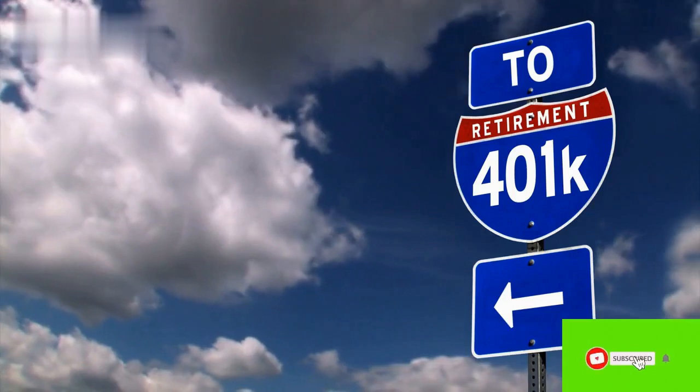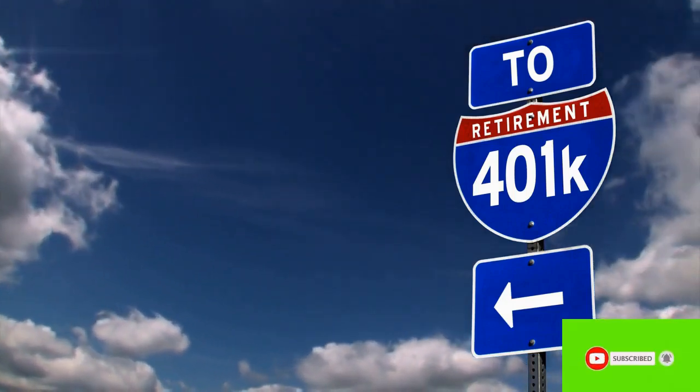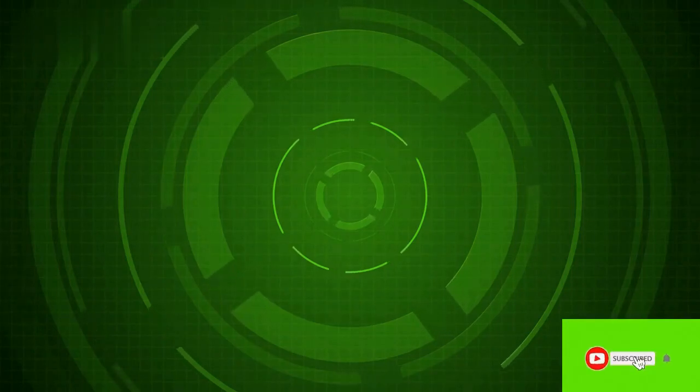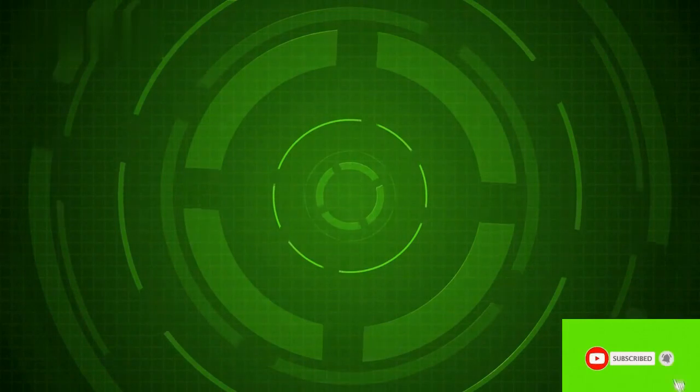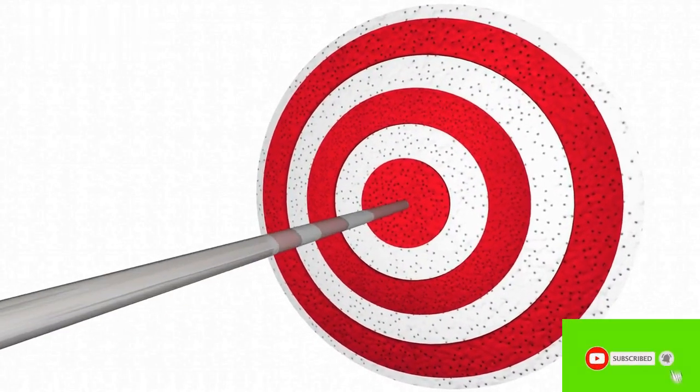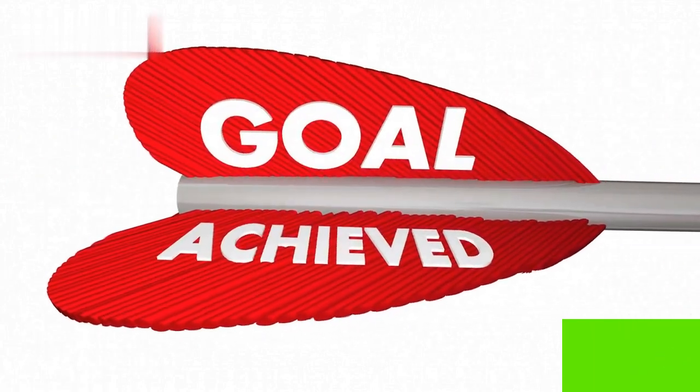Your investment goals should be specific, measurable, achievable, relevant, and time-bound. This means that you should have a specific target amount, a time frame in which you want to achieve your goal, and a clear strategy for how you're going to get there. You should also consider how much you're willing to invest, how much risk you're willing to take, and what kind of investments align with your goals.